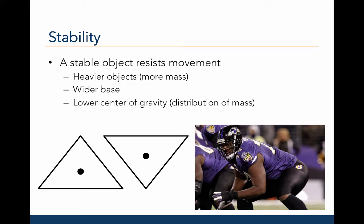The two triangles here represent different objects with different characteristics that affect stability. Let's say that the two objects have the same mass. However, the triangle to the left has a very large base of support, and the center of gravity, indicated by the black circle, is low. In contrast, the triangle to the right has a very small base of support, and the center of gravity, again indicated by the black circle, is high.